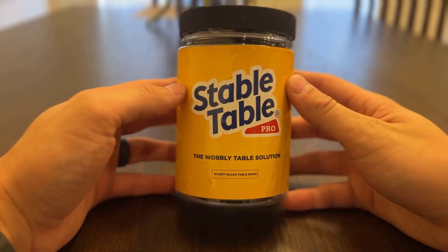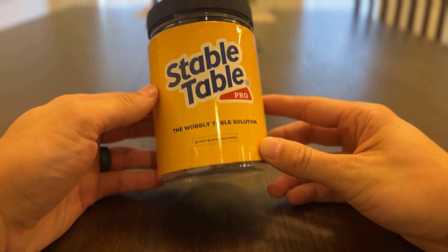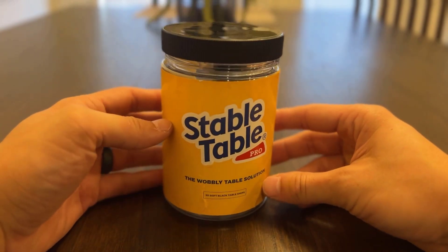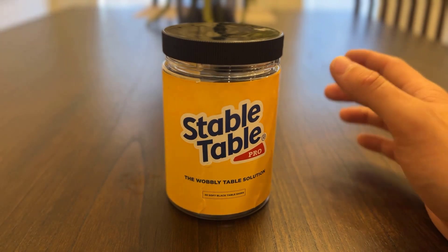Hey guys, welcome to a review of the Stable Table furniture wedges. These things are super handy to have, especially if you've got tile floors or uneven floors where when you put furniture on it, it's got a little bit of a wobble to it because it's not 100% level.